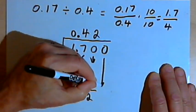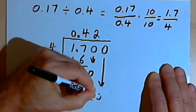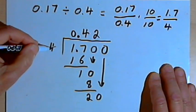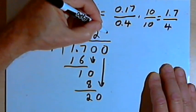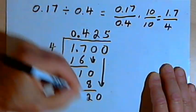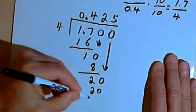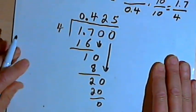So I'll add a 0 to this decimal, the dividend. Bring that 0 down. And I've got 4 divided into 20. That goes 5 times. 5 times 4 is 20. And I've got a 0 remainder.